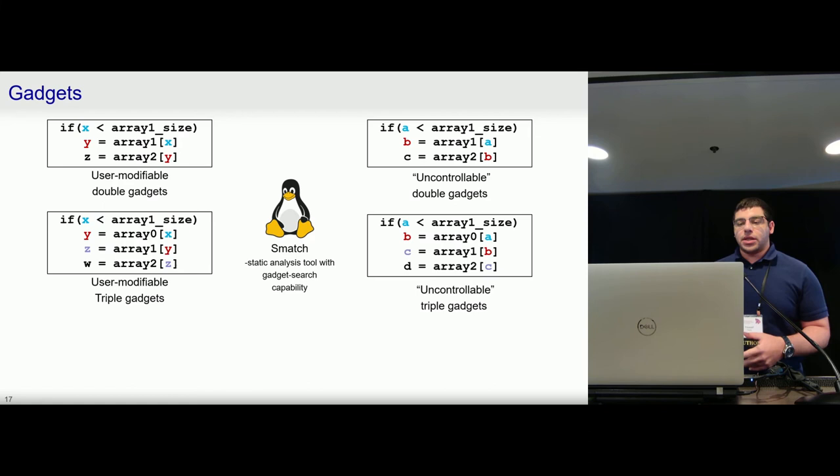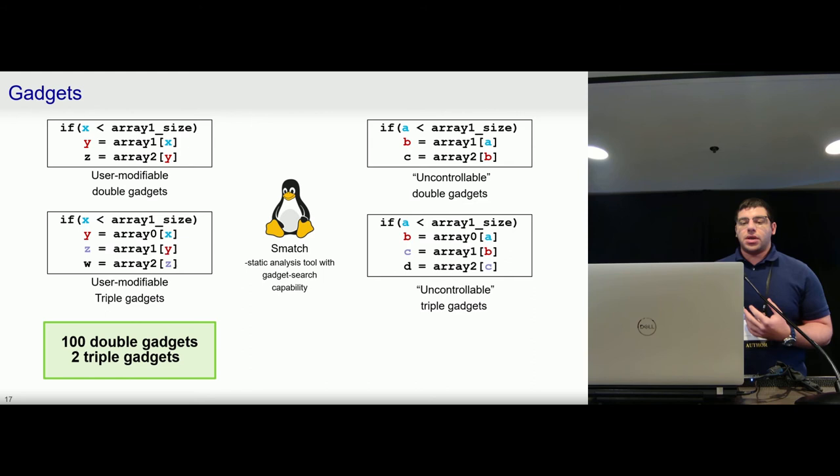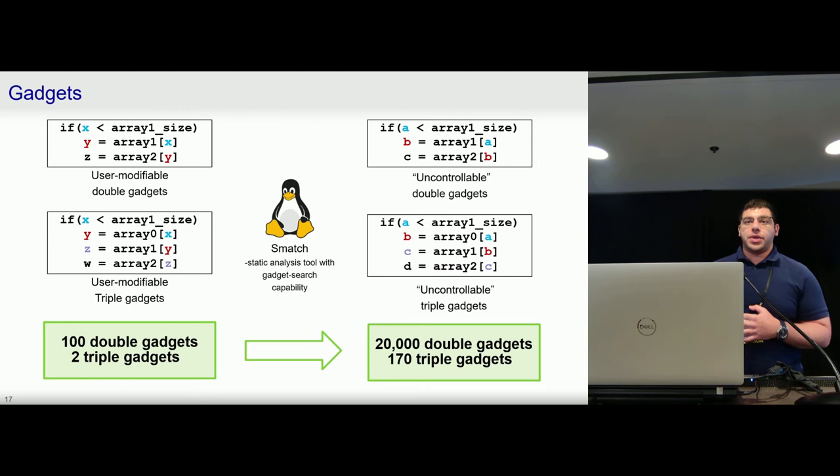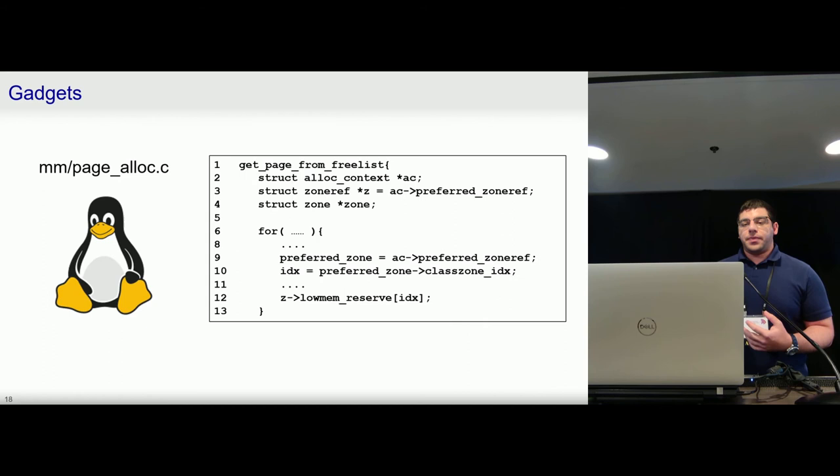So the tool reported in the case of these user modifiable gadgets, 100 double gadgets and 2 triple gadgets. And when we remove this restriction that the attacker has to control the variable, this number increased to 20,000 double gadgets and 170 triple gadgets. Now this was an early tool, and so it is prone to produce false positives, but at the same time we don't take this number as a ceiling of the number of gadgets that are newly exploitable in the kernel, as we were able to find false negatives as well.